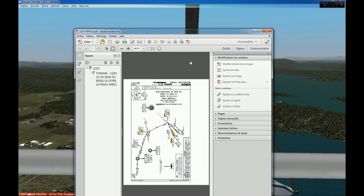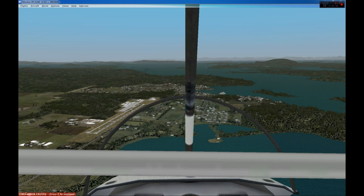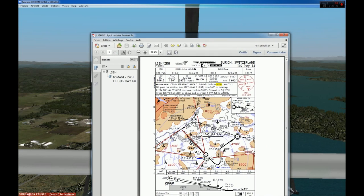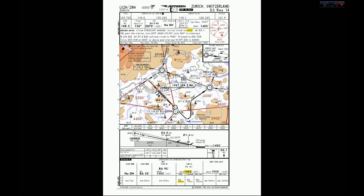Let's have a quick look at the ILS-14. We will be coming from the STAR to Gipol, then follow radial 055 inbound through Razadingan to the final fix Osnem at 4000 feet, where we join the 3-degree descent ILS down to a Cat 1 minimum of 1602 feet for ILS-14 in Zurich. So how do we practice that with FSI Panel?